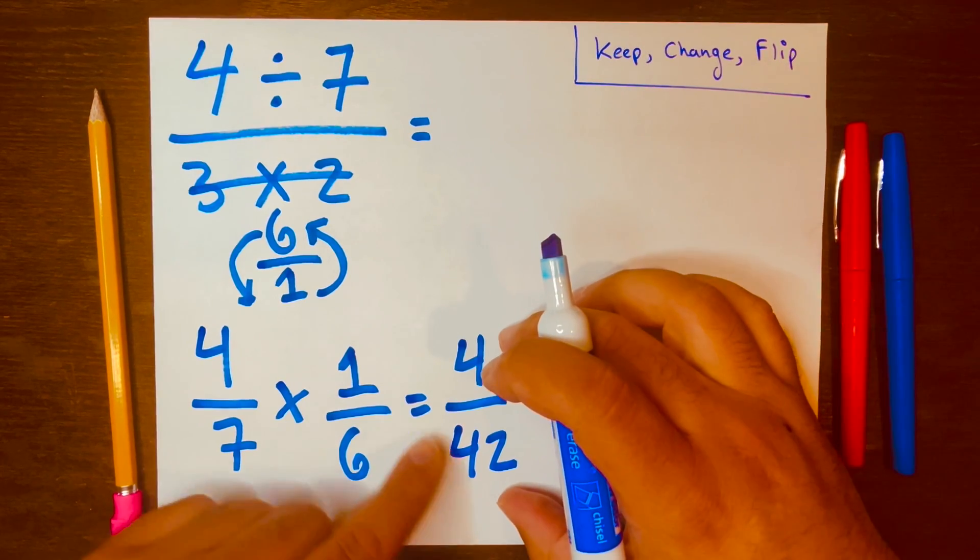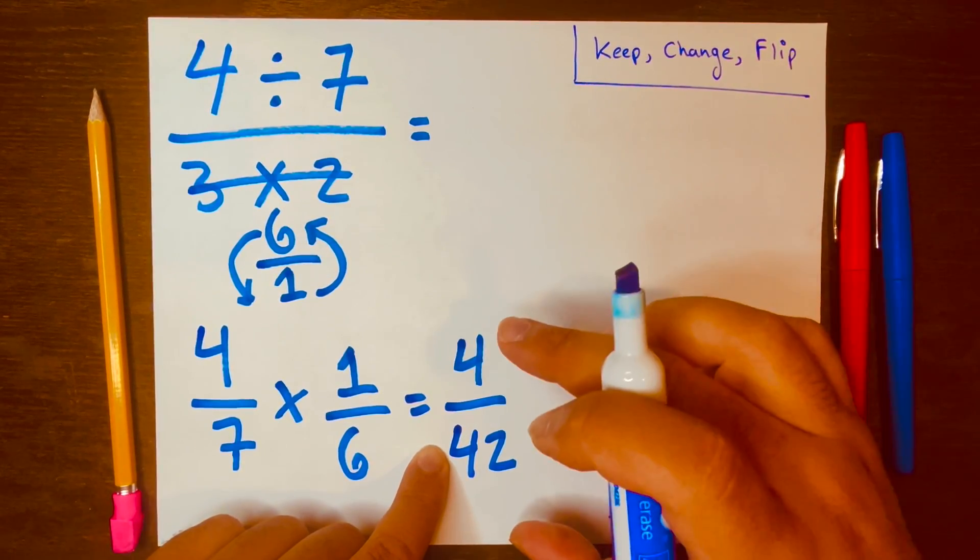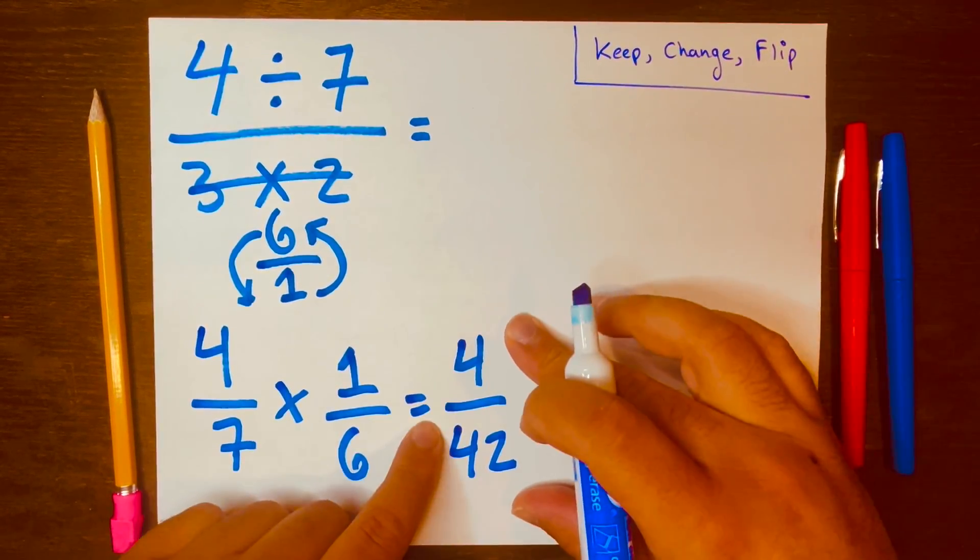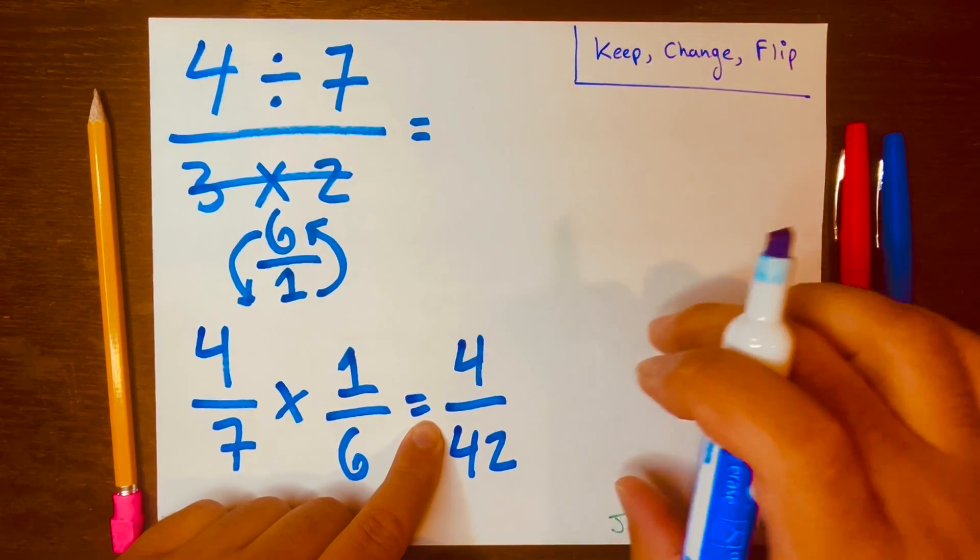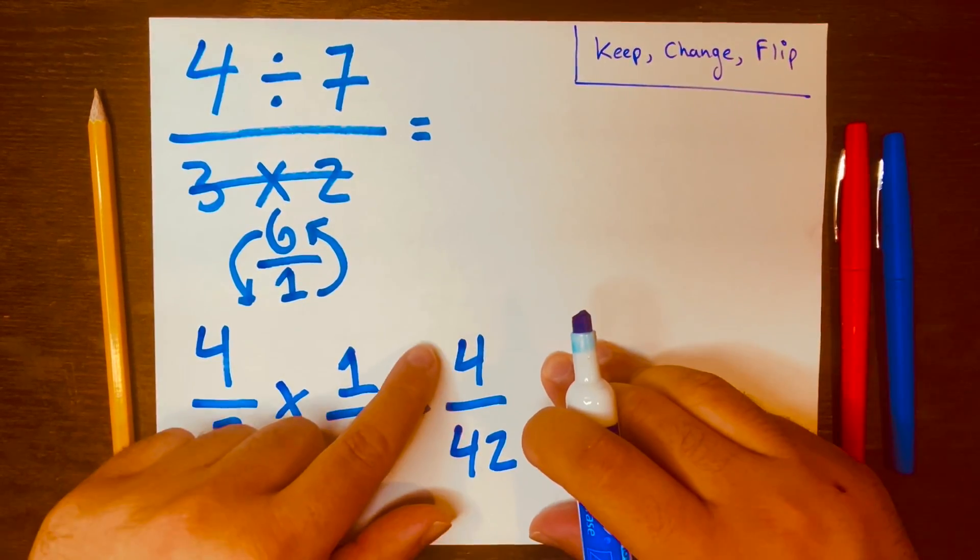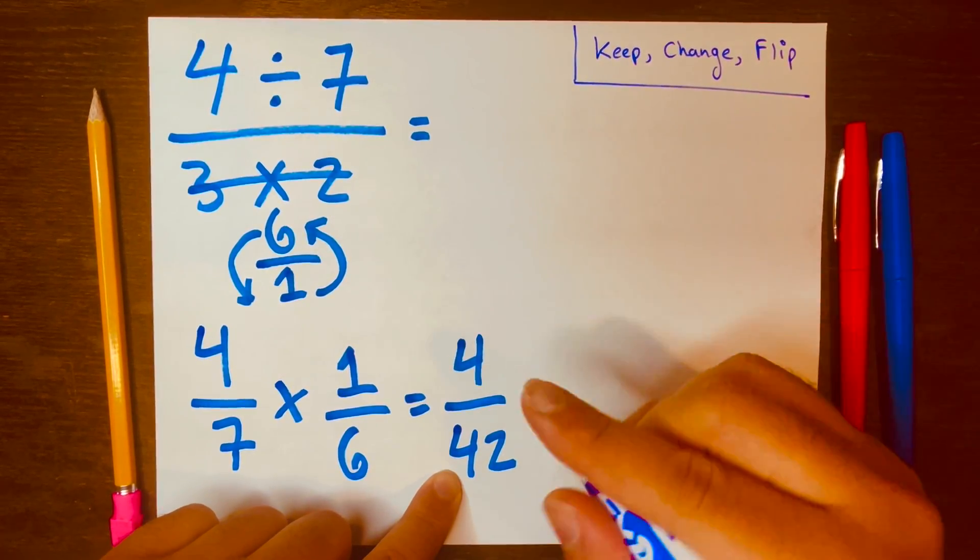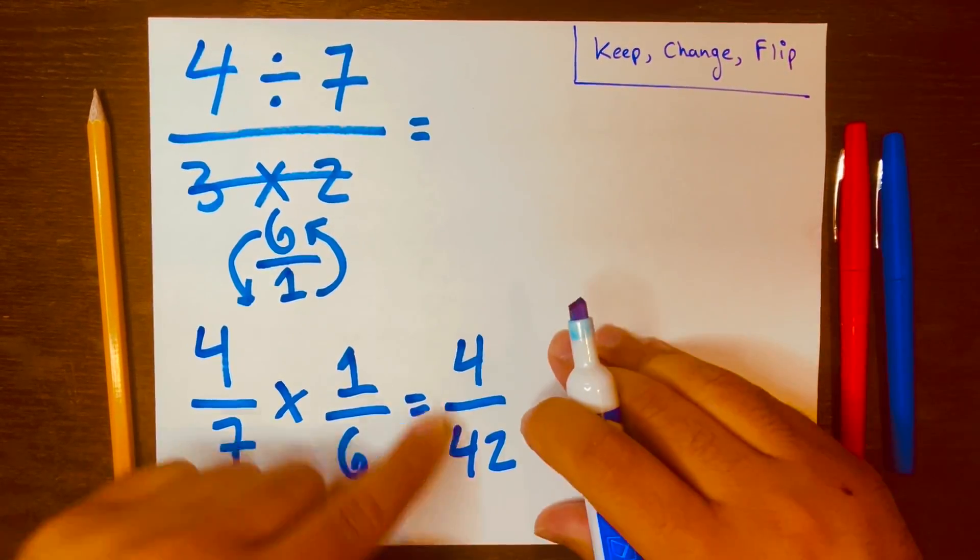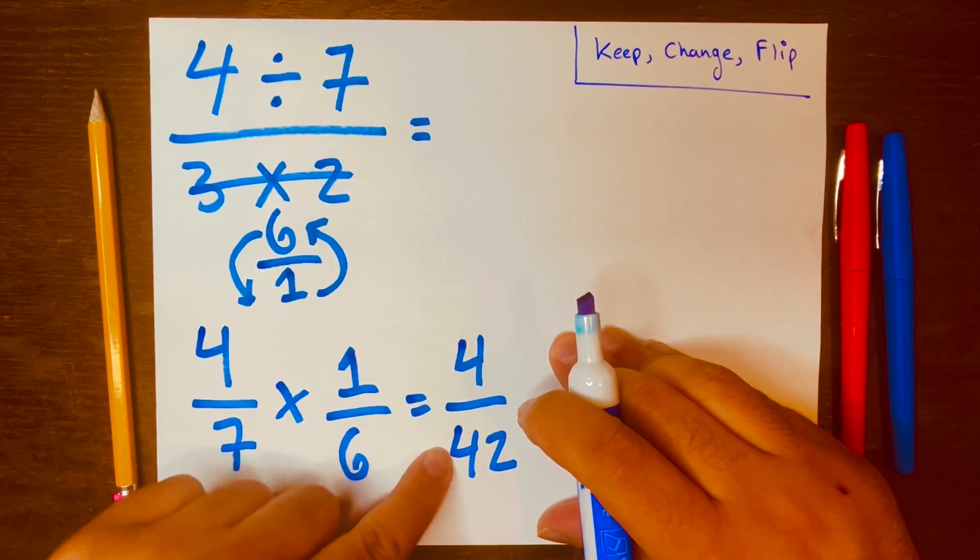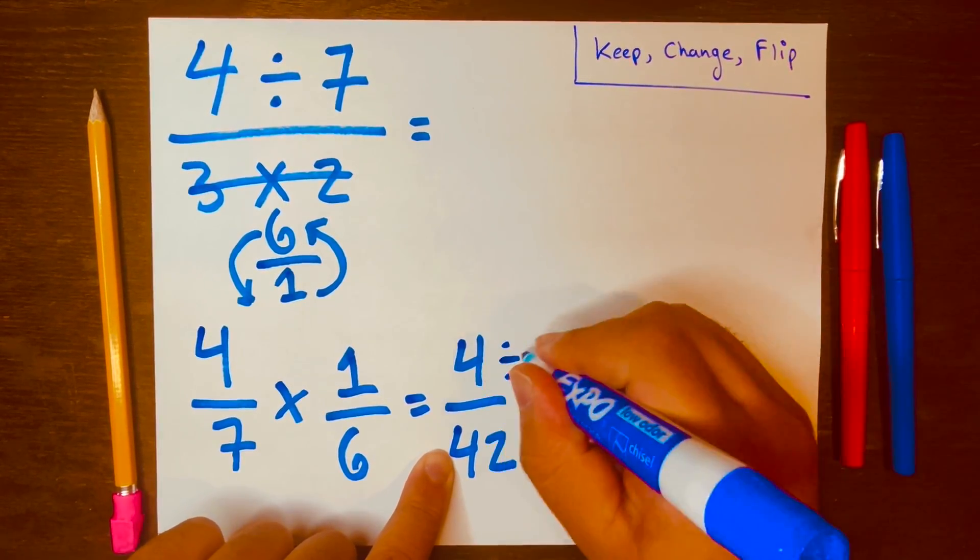And now we have a fractional answer that we cannot leave like this because it can be simplified to its simplest terms. 4 over 42 can be simplified. All we have to do is divide by 2 because both the top number and bottom number are even. So let's go ahead and divide that by 2.